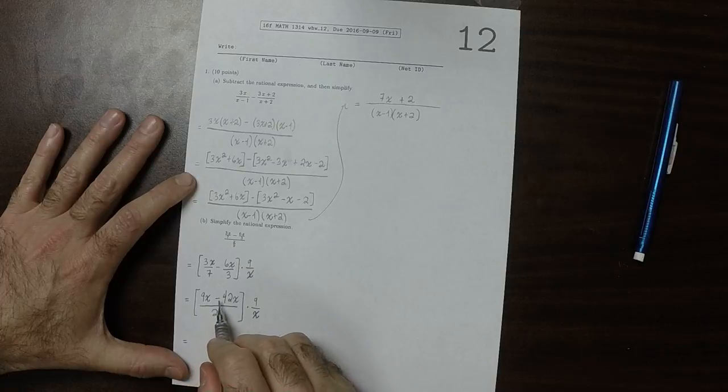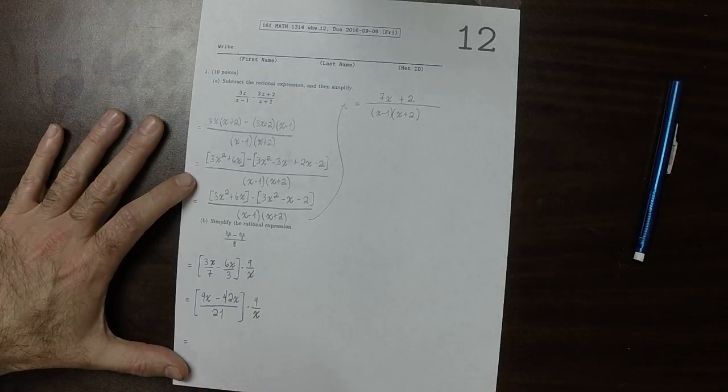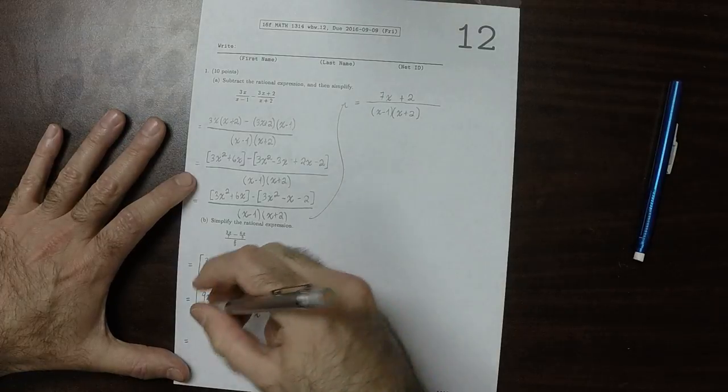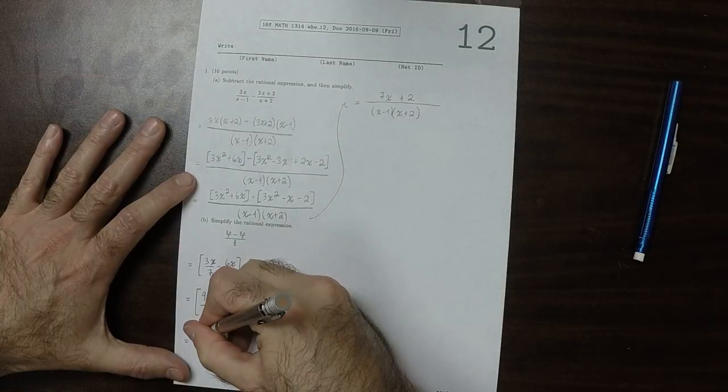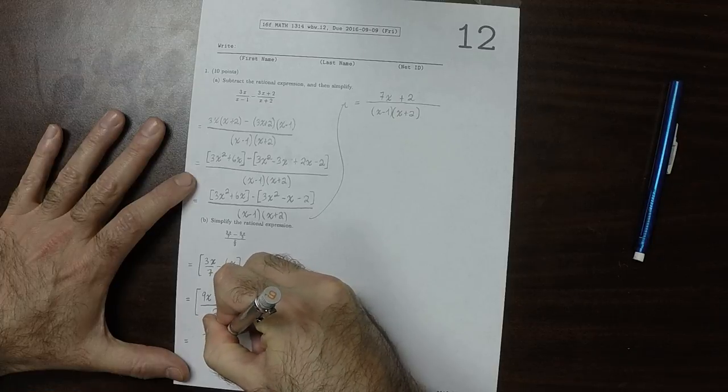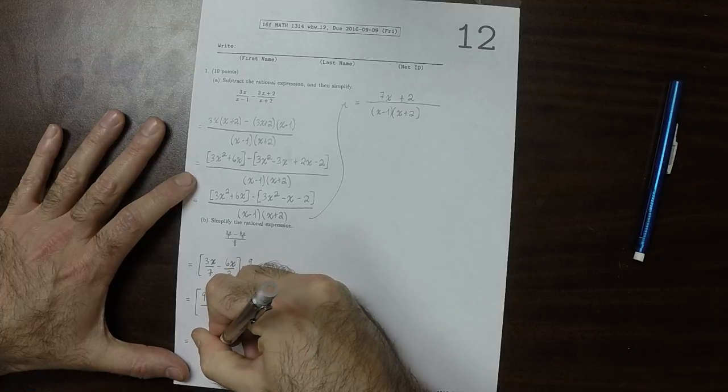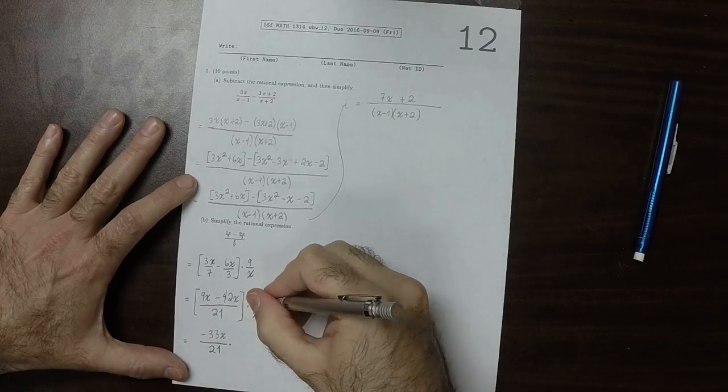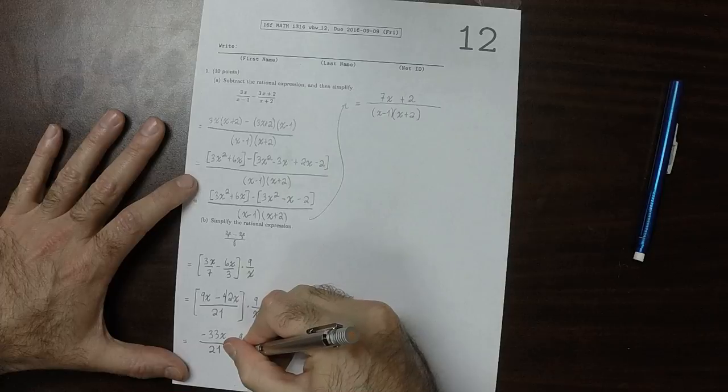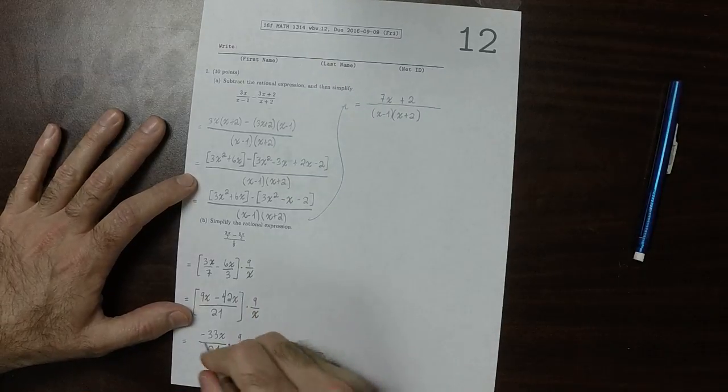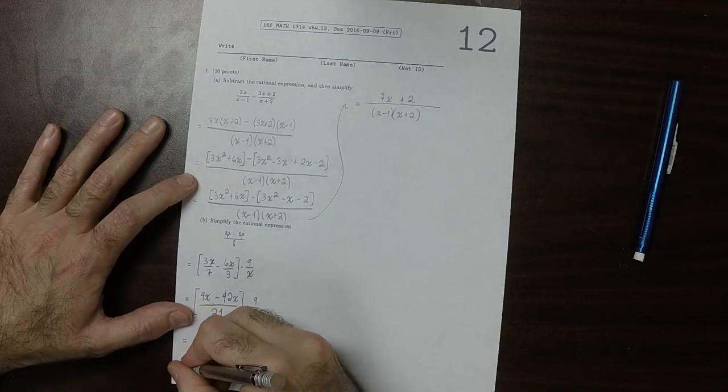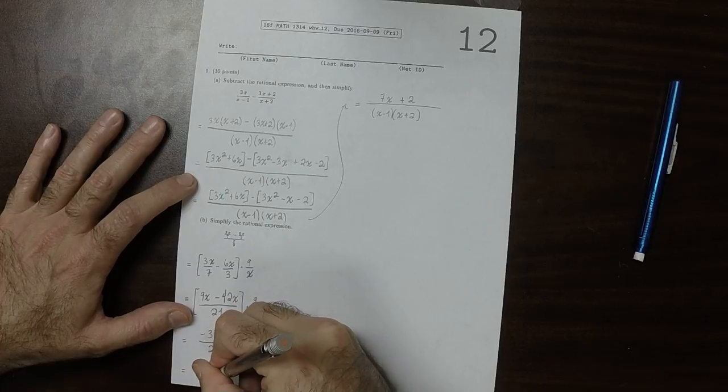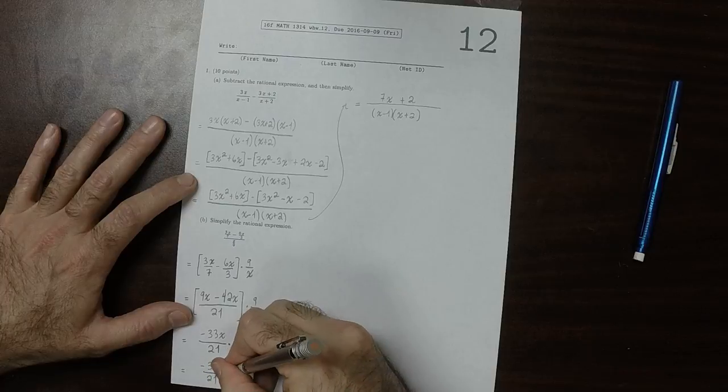9x minus 42x is negative 33x over 21, and we're going to multiply by 9 over x. So the x's cancel.